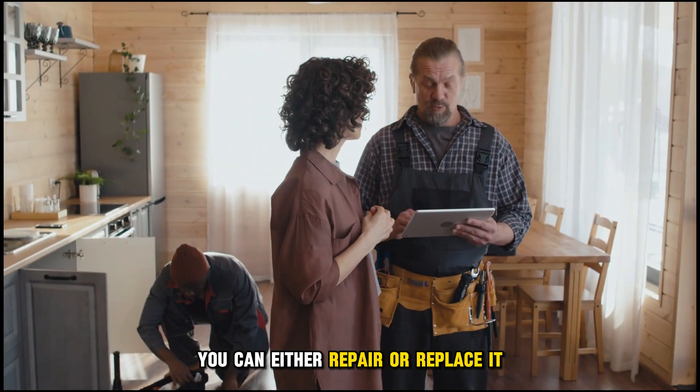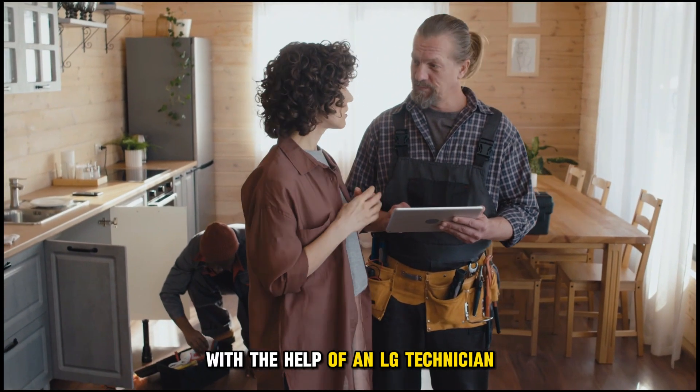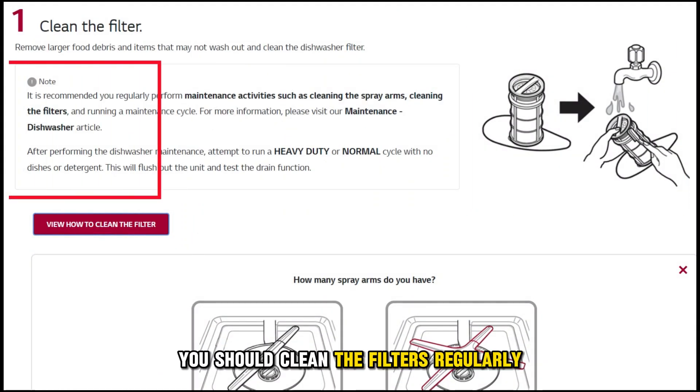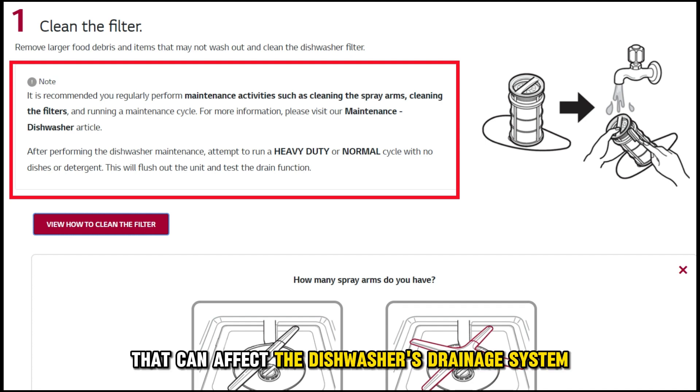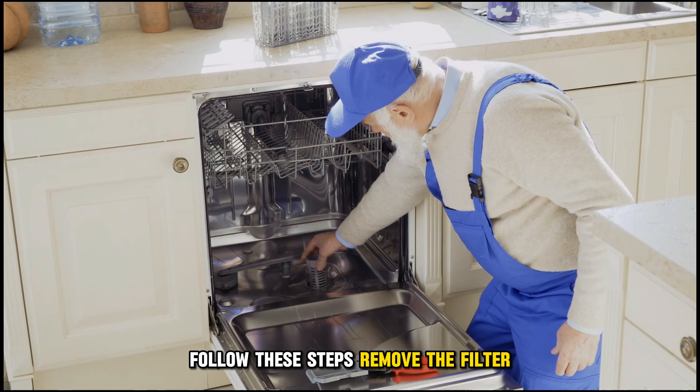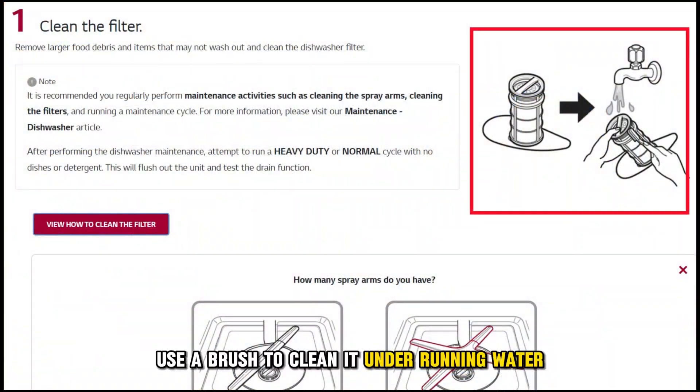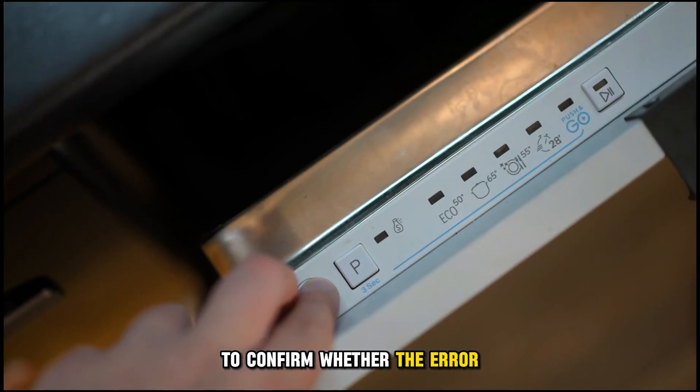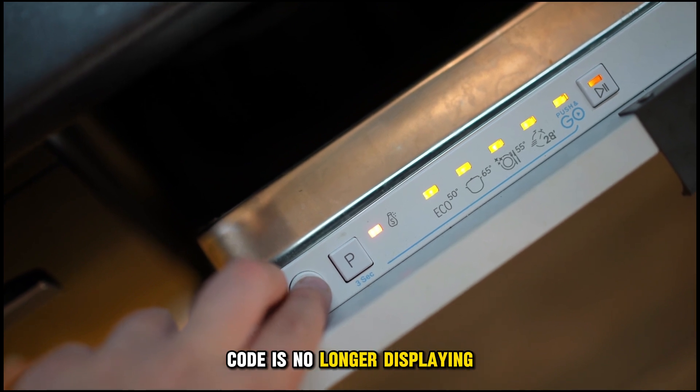Clean the filters. You should clean the filters regularly to prevent any blockages that can affect the dishwasher's drainage system. Follow these steps: Remove the filter, use a brush to clean it under running water, put it back in place, and run the dishwasher to confirm whether the error code is no longer displaying.